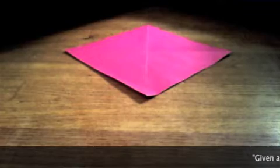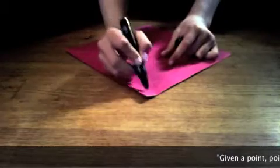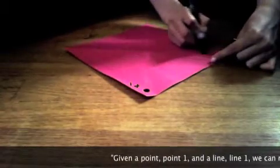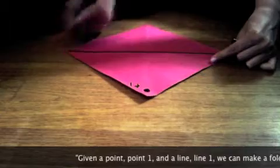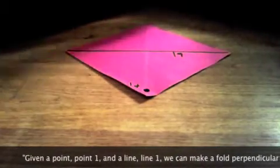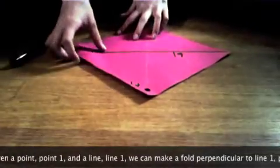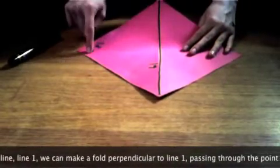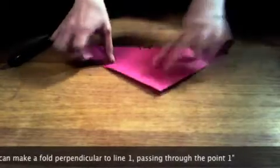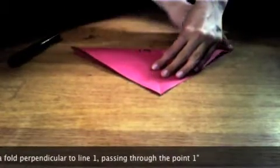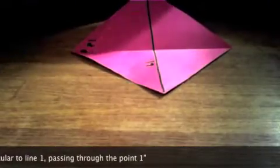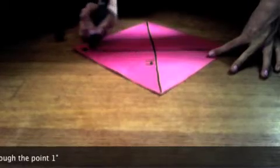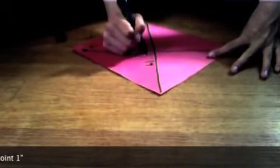The fourth axiom states that if you are given a point, point one and a line, line 1. Therefore then, we can fold a line that's perpendicular to line 1, but passes through point 1. Notice how this line passes through point 1, perpendicular to line 1.